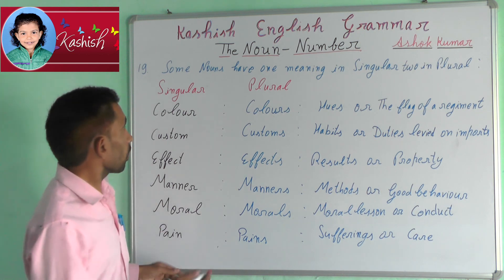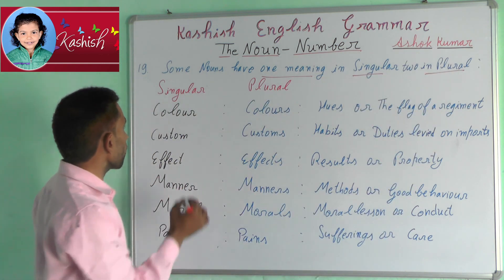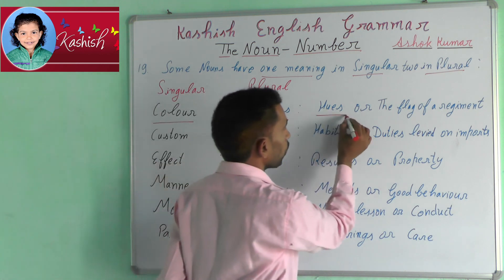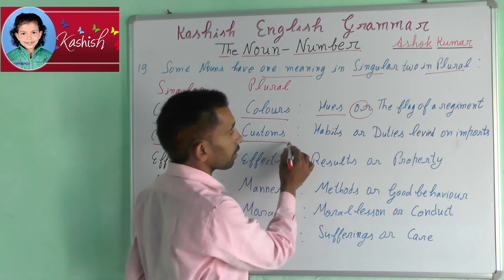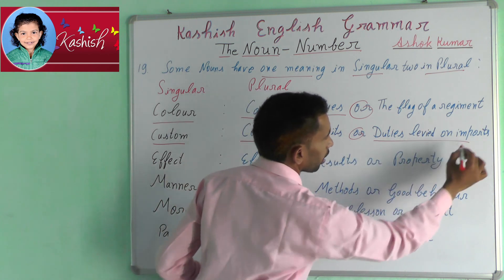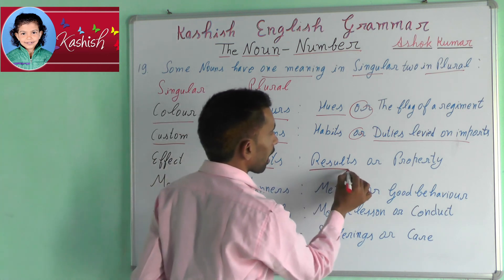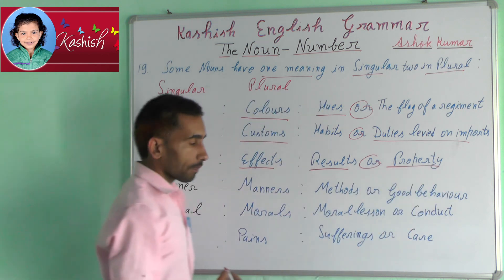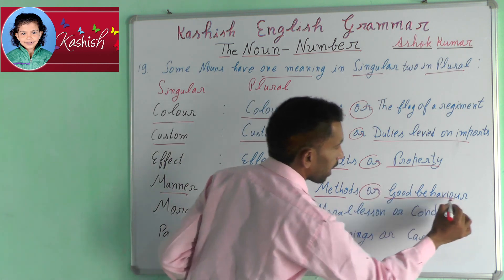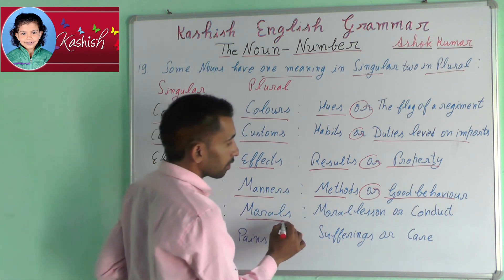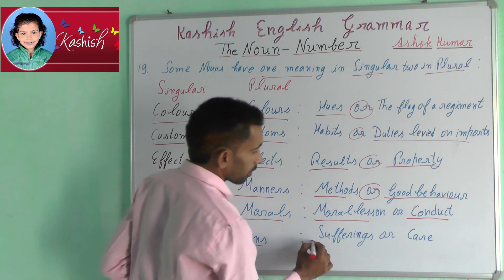Nineteenth rule: some nouns have one meaning in singular and two meanings in plural. For example: color → colors (hues) or the flag of a regiment. Custom → customs (habits) or duties levied on imports. Effect → effects (results) or property. Manner → manners (methods) or good behavior. Moral → morals (moral lesson) or conduct. Pain → pains (sufferings) or care.